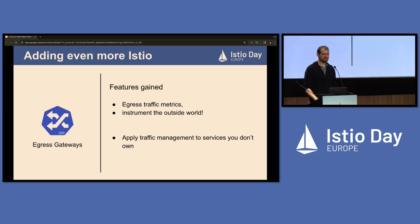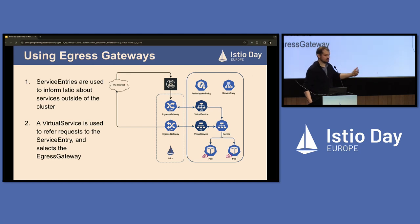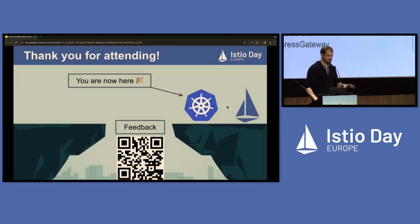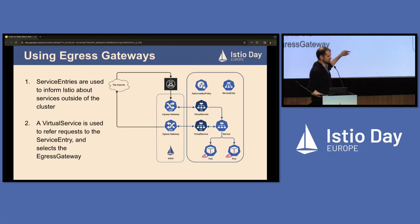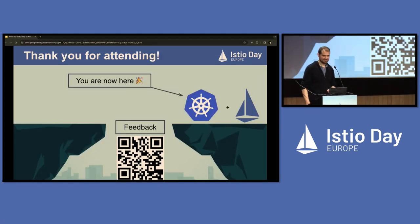The last thing is the egress gateway. What you can do with it is instrument, block, and prevent traffic to services you don't own — essentially adding Istio to the entire internet. You create a virtual service for an external API and a service entry for that external API. Istio notices there's a virtual service and a service entry for it, and you can use your policy to attach that virtual service to the egress gateway. The egress gateway then gives you all the metrics and control about everything going outside your cluster — the same as you have for traffic inside. You've essentially extended Istio to things you don't own.